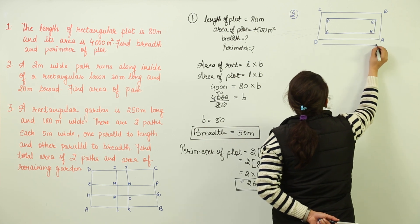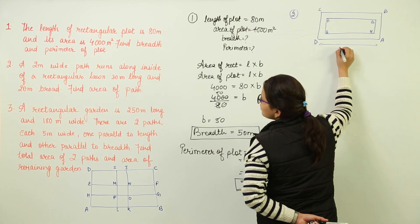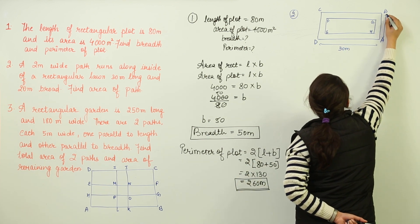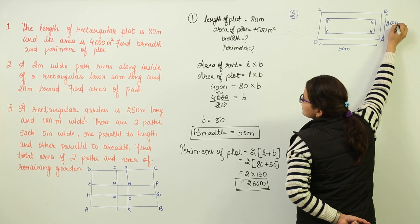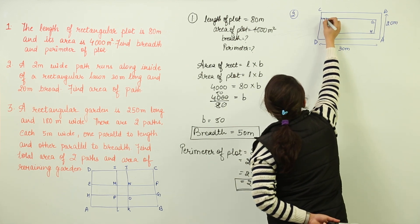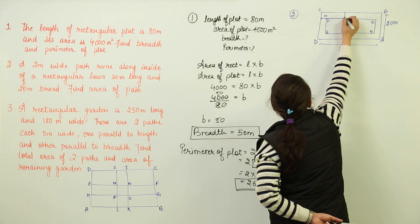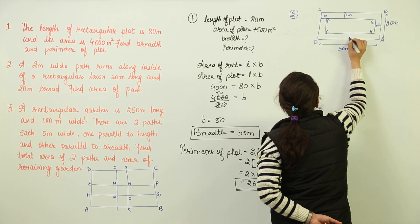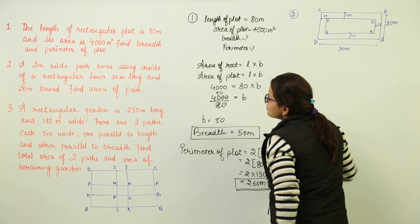Let us give the measurements also. So the length of the lawn has been given to us as 30 meters and the breadth has been given to us as 20 meters, and what is the width of the path given? That is given to us as 2 meters respectively. So we will mention the 2 meters length across each path.